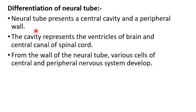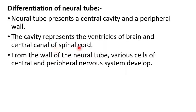Regarding differentiation of the neural tube: the neural tube presents a central cavity and a peripheral wall. The central cavity represents the ventricles of the brain and the central canal of the spinal cord. From the wall of the neural tube, the various cells of the central and peripheral nervous system develop.